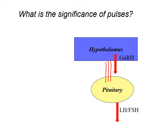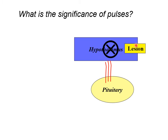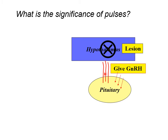But what was the real significance of the frequency of the pulses? Did it matter how frequent they were? This was nicely addressed in an experiment done on rhesus monkeys. Lesions were placed in the hypothalamus to stop GnRH being produced — with no GnRH, not surprisingly there was no LH or FSH. This system could then be used to artificially give back GnRH at various frequencies. It could be given back continuously, at a physiological frequency, at a supraphysiological frequency, or very slowly.